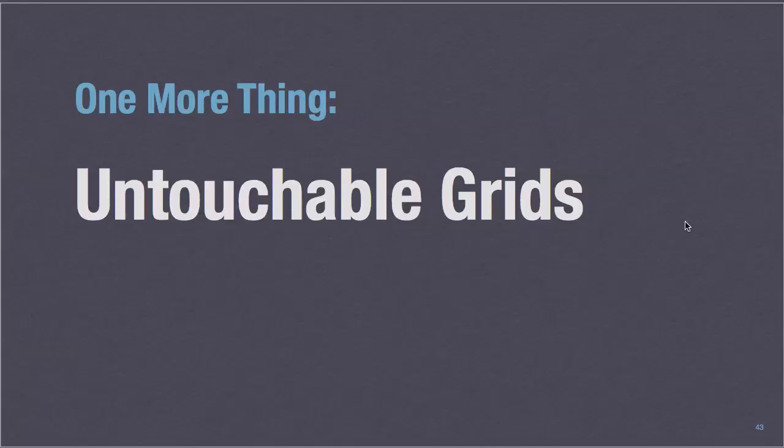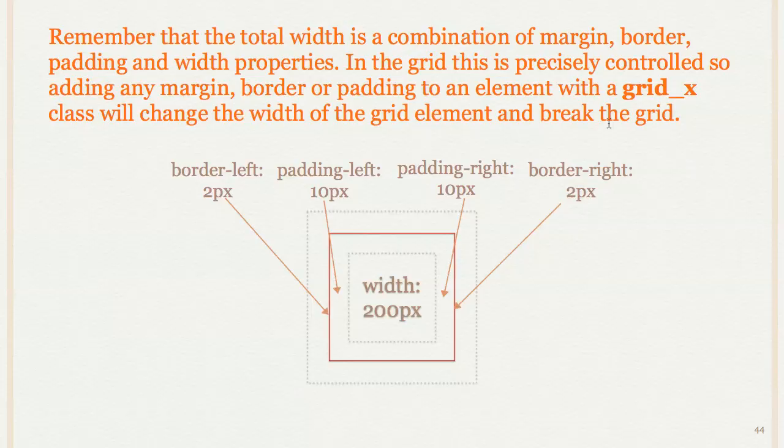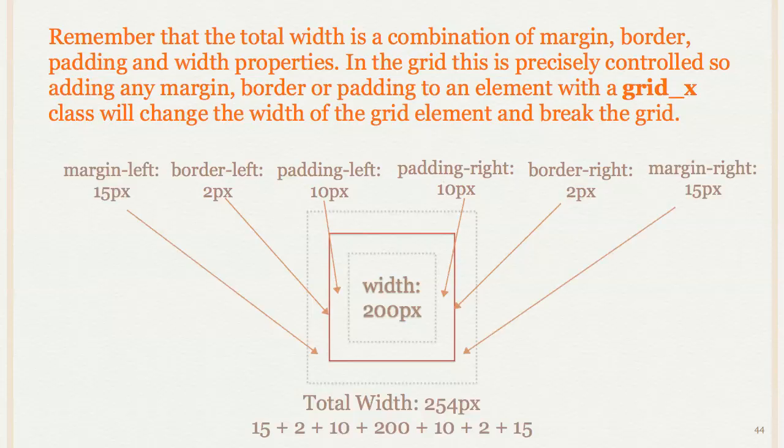All right, so the other concept to come back to here is this idea of untouchable grids. And it goes back to our idea in the box model that the total width is the combination of all of the padding, margins, and borders that we have. So our grids, though, define very tightly that they say, I'm going to add 10 pixels of margin and a certain width to each element. So if you add an additional padding to it, all of a sudden now that thing is wider and it also will break the grid.